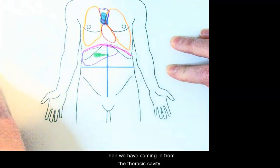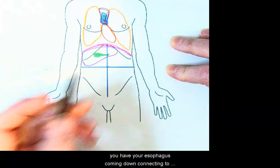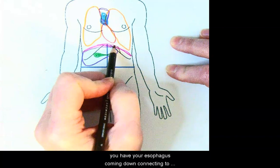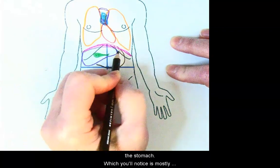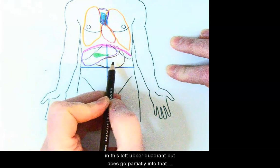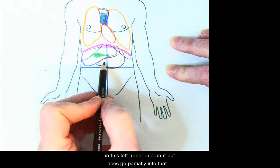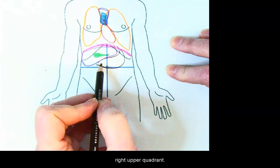Then we have coming in from the thoracic cavity, you have your esophagus coming down, connecting to the stomach, which you'll notice is mostly in this left upper quadrant, but does go partially into that right upper quadrant.